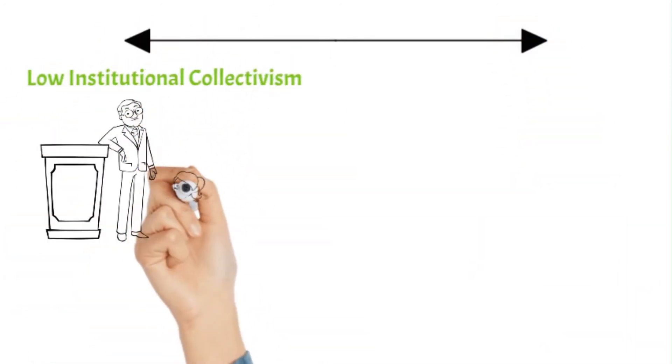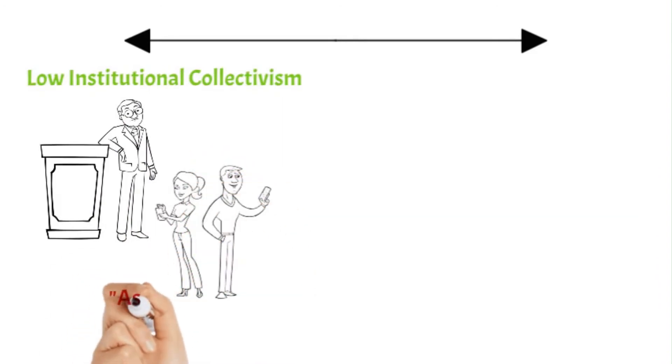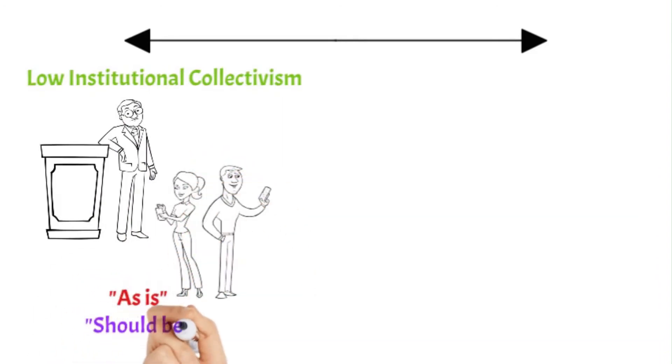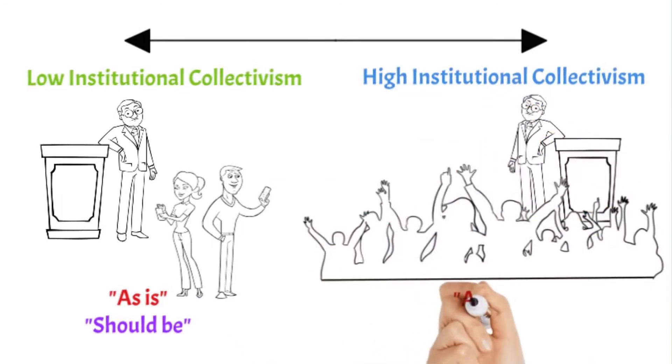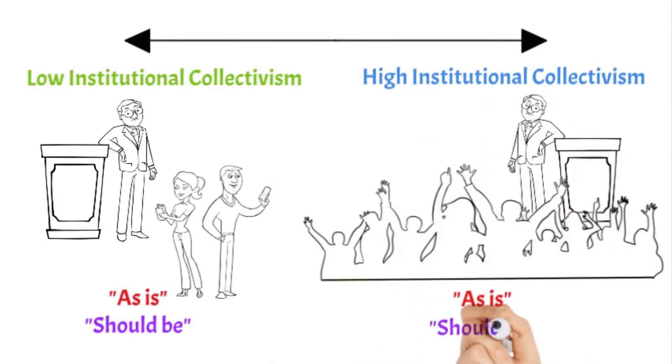Institutional collectivism is the degree to which organizational and societal institutional practices encourage and regard, and should encourage and regard, collective distribution of resources and collective action.